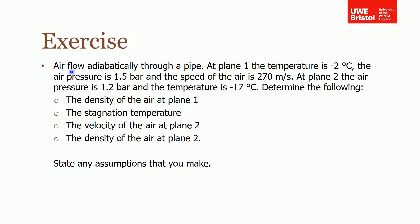In this exercise you were asked to consider an example where air flows adiabatically through a pipe. You know some of the conditions at plane 1: the temperature is minus 2 degrees Celsius, the pressure is 1.5 bar, and the velocity of the air is 270 metres per second.